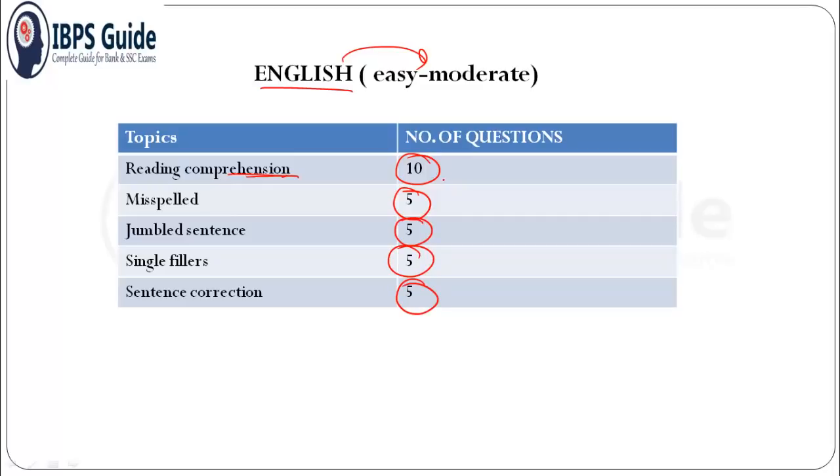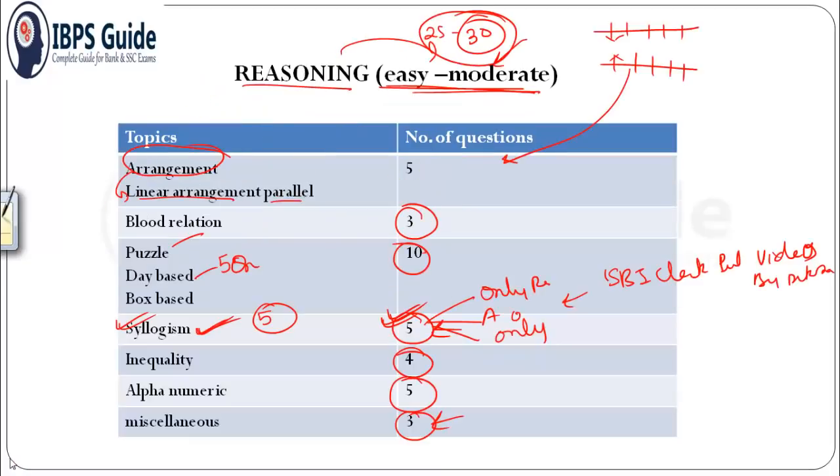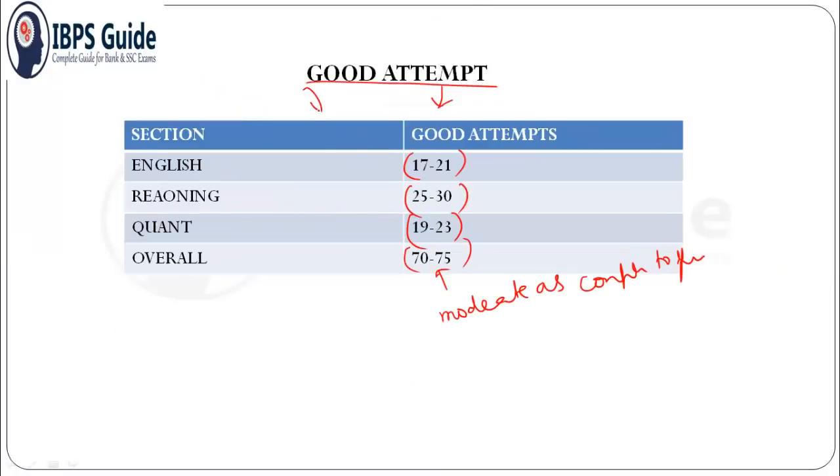And sentence correction - five questions. So English was also of easy to moderate level. RC was also not that tough. One important point to remember: they did not ask cloze test. Cloze test was not asked, and they introduced misspelled words in this shift. Here is the detailed analysis of all three sections separately, and here is the good attempt.